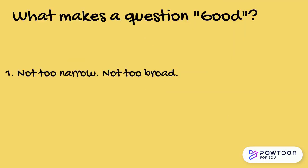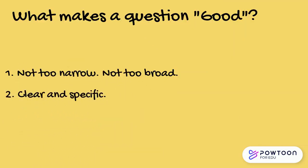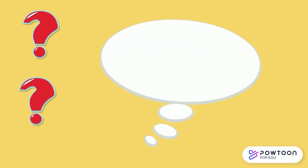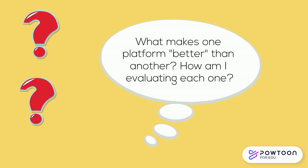A research question is clear and specific. For example, a question such as, what is better, Twitter or Threads, is vague. It's not clear what you mean by better or on what criteria you will judge the two platforms.